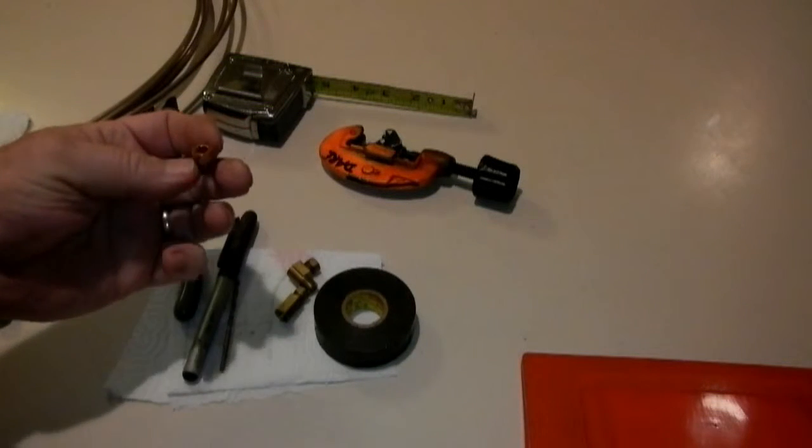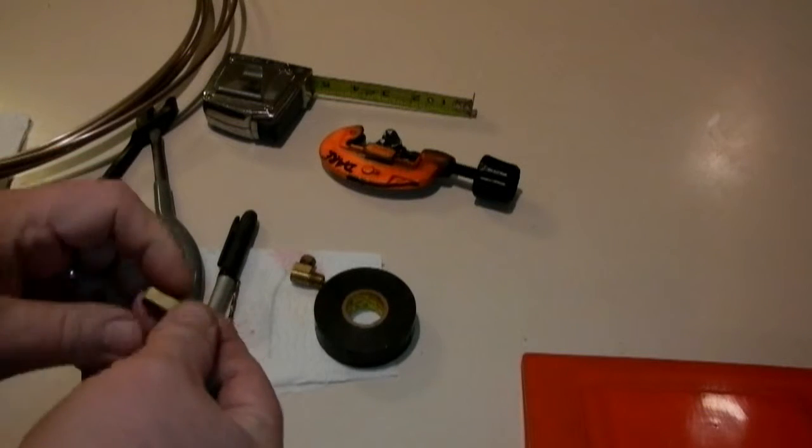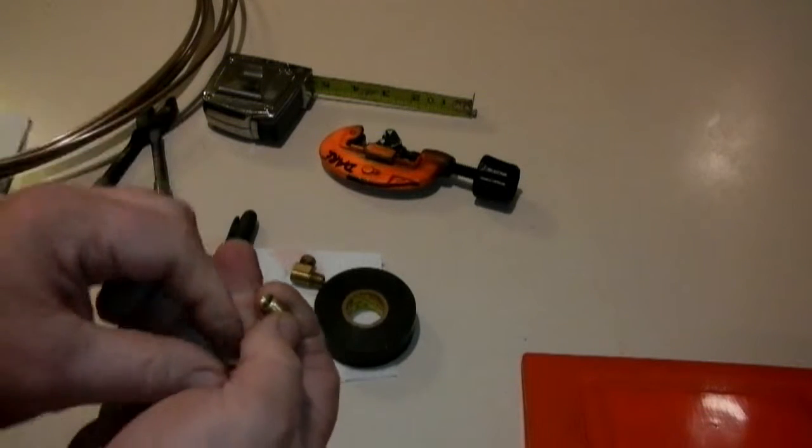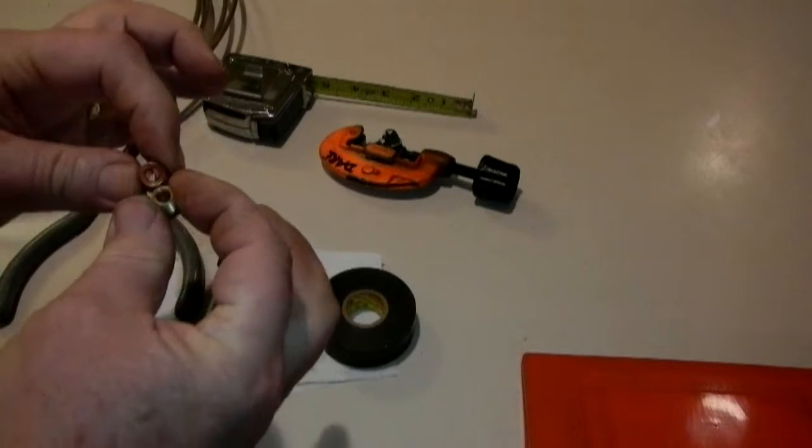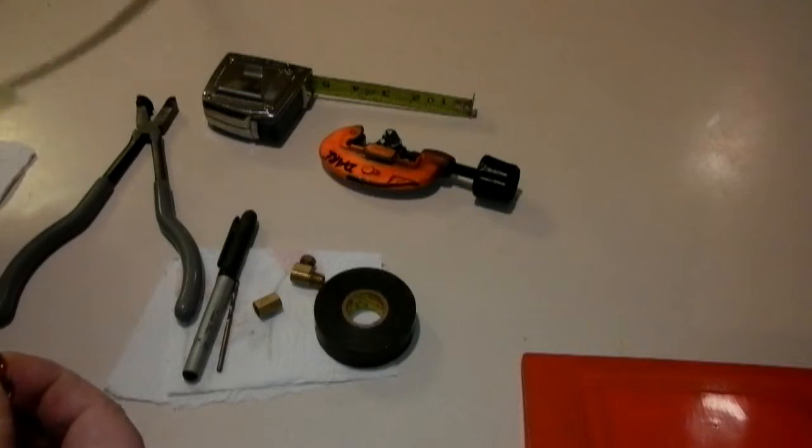There's two kinds of nuts here: one's a three-eighths and the other is a seven-sixteenths. Both of them are for three-sixteenths brake line.